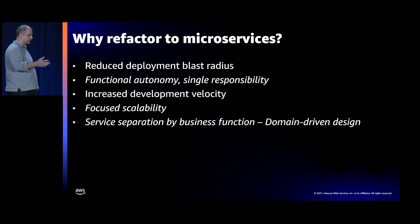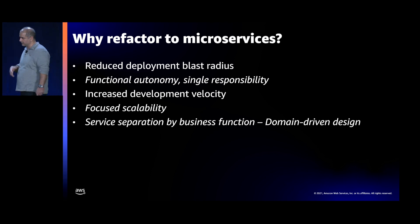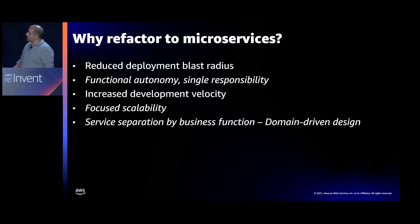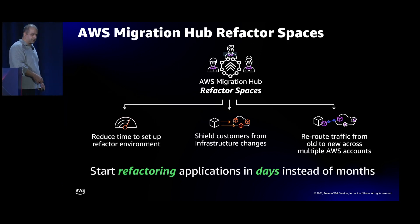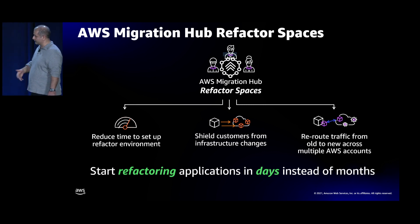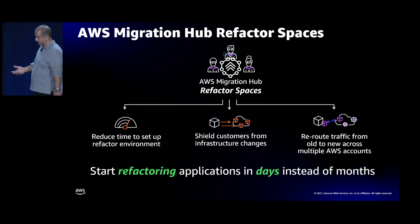This kind of drives domain-driven design and the ability to separate functions out. Now take that example and apply it to dozens, hundreds, thousands of applications. How do I standardize that process? How do I make it easier for developers to start refactoring monoliths into specific microservices? We just launched AWS Migration Hub Refactor Spaces in preview, which allows you to create a refactor environment that standardizes the ability to create microservices and reduces your time to set up that refactor environment.